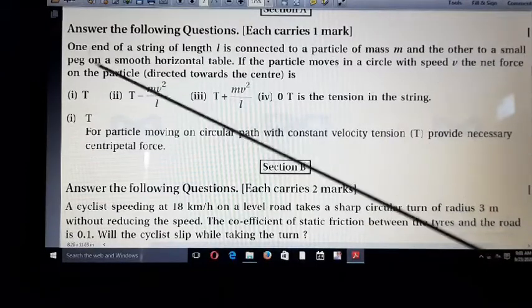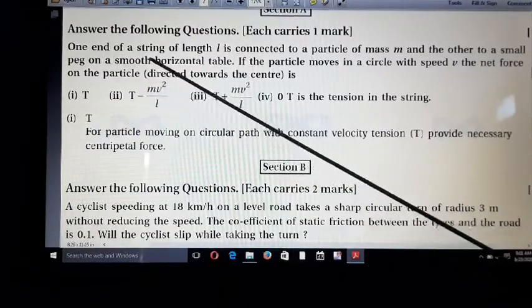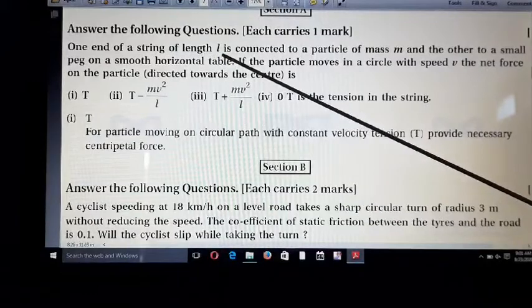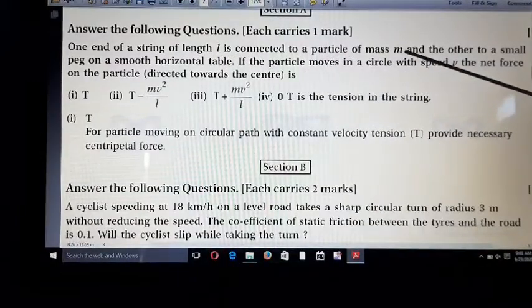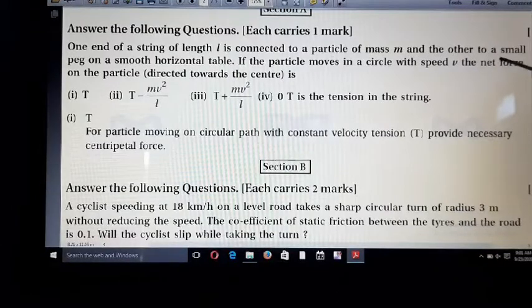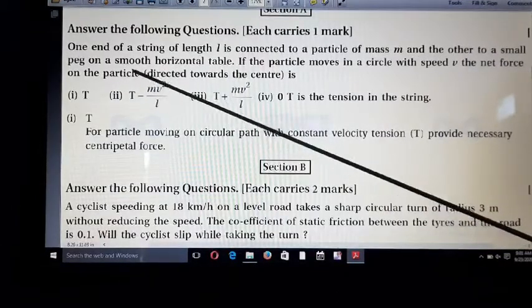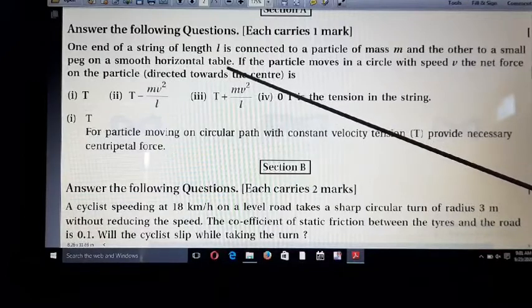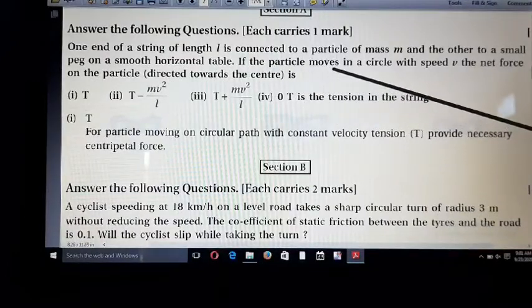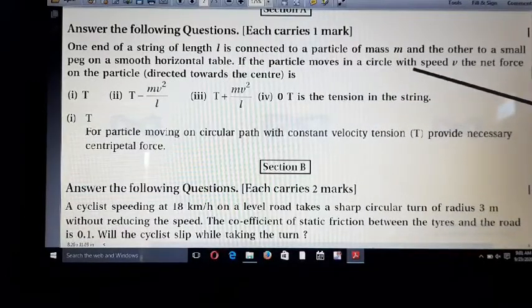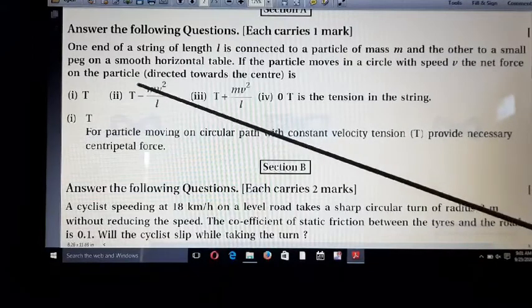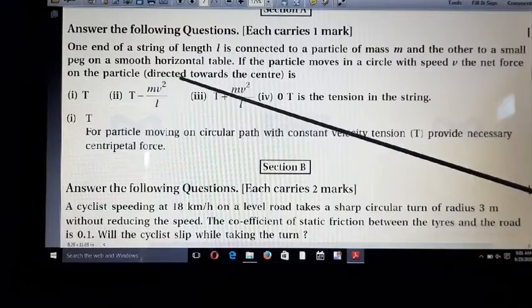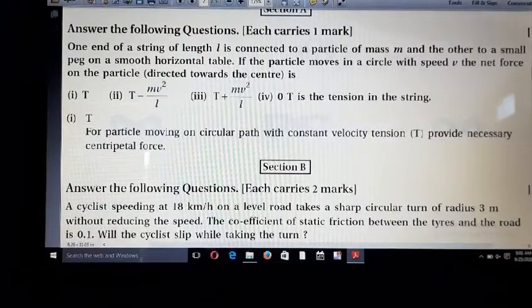Question is, one end of a string of length L is connected to a particle of mass m and the other to a small peg on a smooth horizontal table. If the particle moves in a circle with speed v, the net force on the particle directed toward the center is how many.